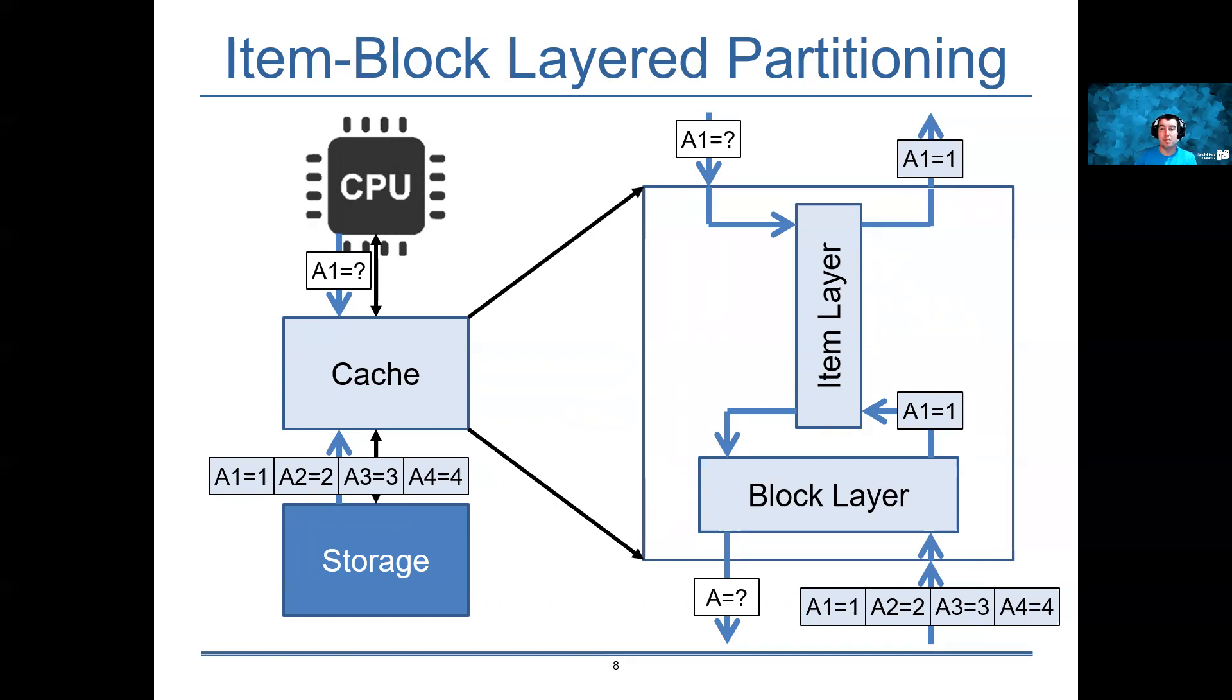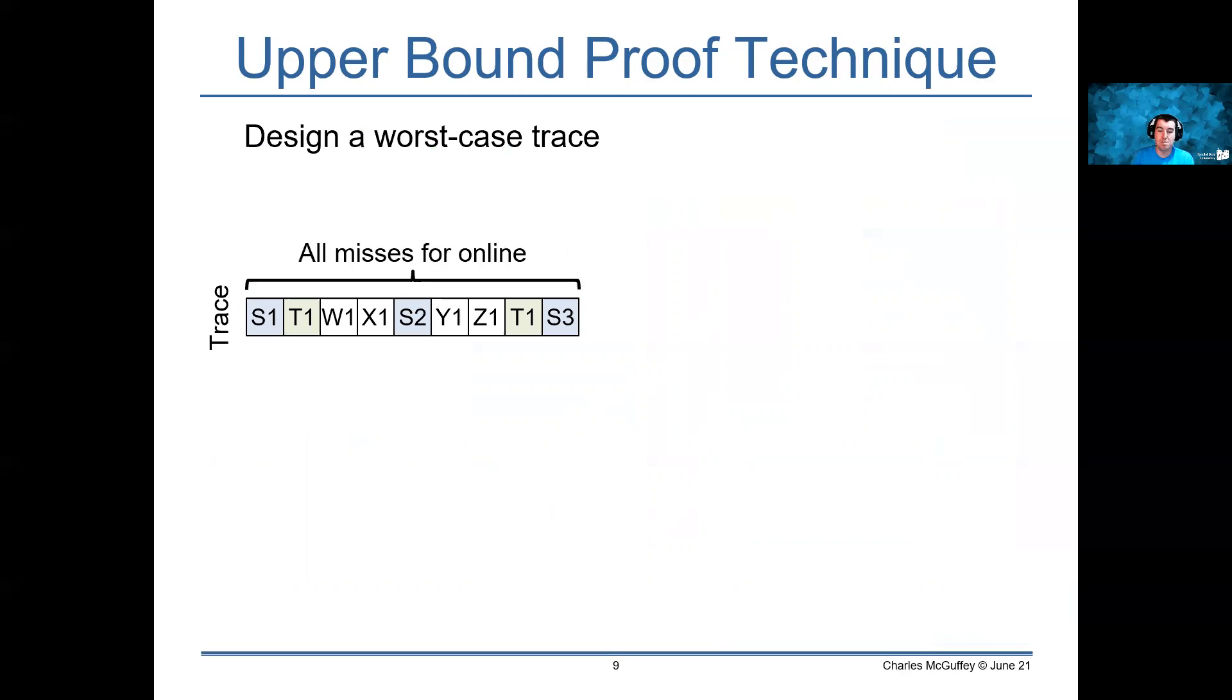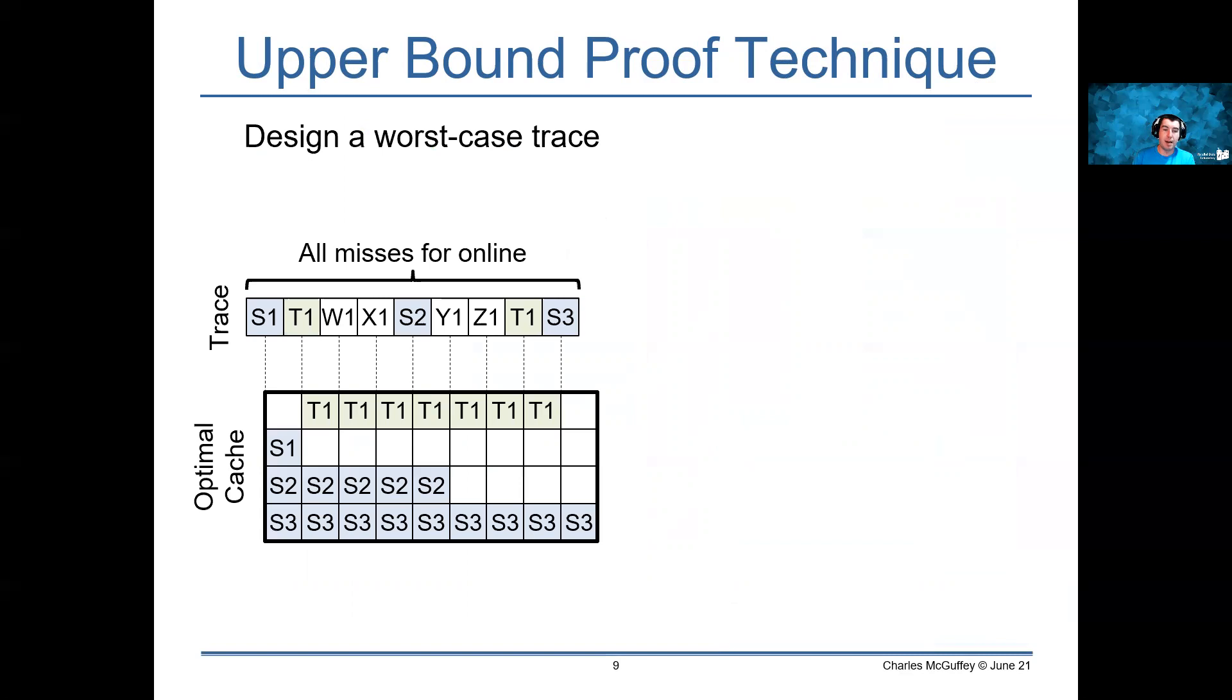We're able to prove an upper bound for this policy using a new proof technique for competitive ratios. Our technique relies on designing a dynamic worst-case trace where we design our trace specifically so that all accesses are misses for the online policy we're trying to come up with a bound for. Then we analyze the performance of the optimal cache on this worst-case trace, accounting for both temporal locality, which is the traditional way caches get hits.